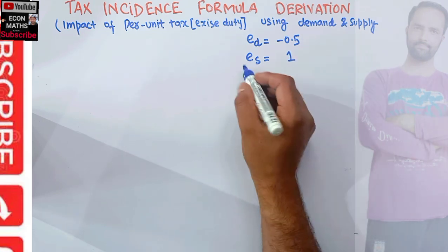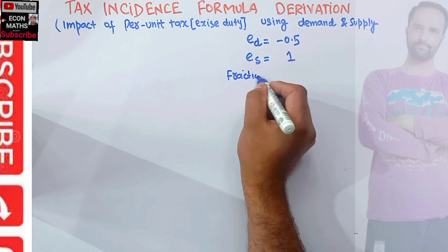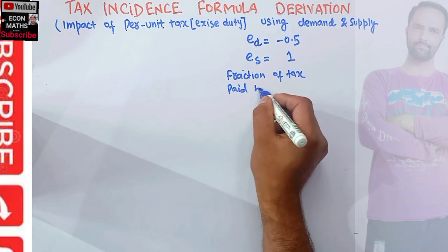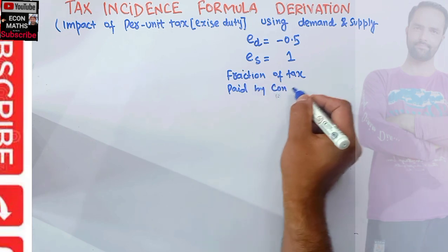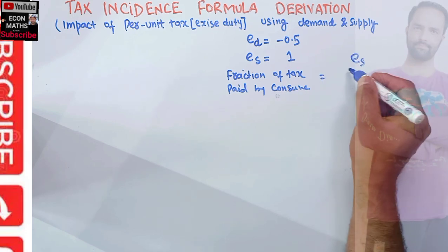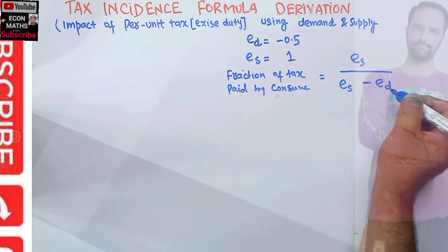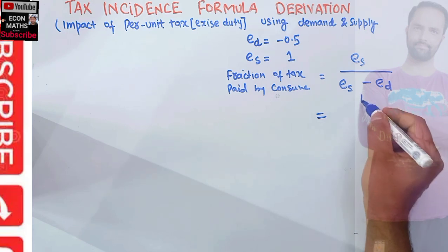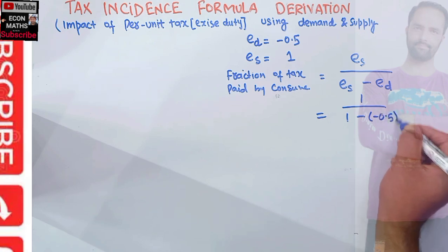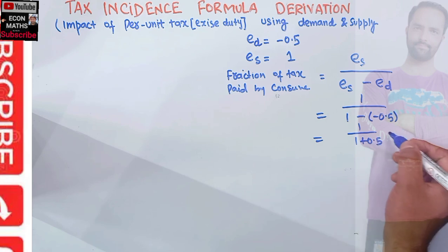The fraction of tax paid by consumers — that is, the tax incidence on consumers — is given by the formula: elasticity of supply divided by elasticity of supply minus elasticity of demand. If elasticity of supply is 1, we get 1 divided by 1 minus (−0.5), which becomes 1 divided by 1 plus 0.5.